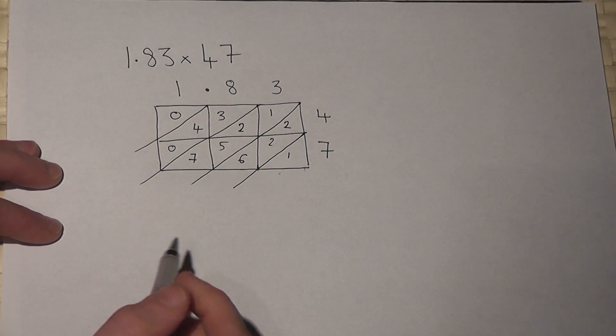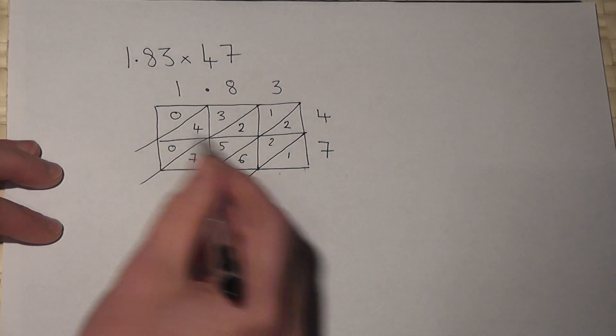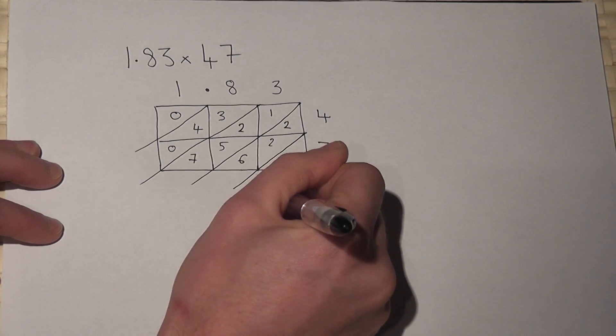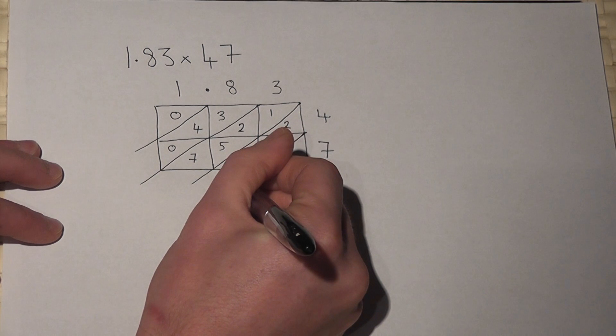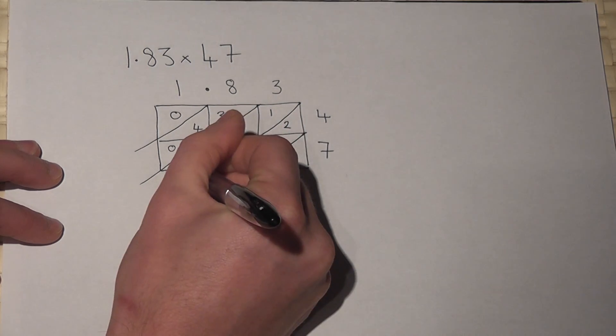I now add up the diagonals, starting from the bottom right corner. So we have 1. 6 plus 2 plus 2 is 10. So I put a 0 here and carry the 10 across.